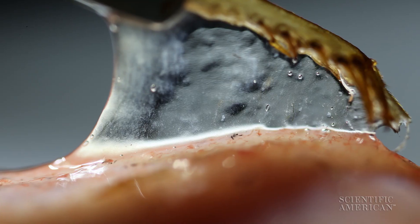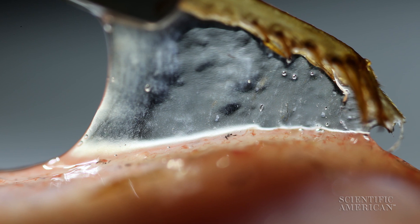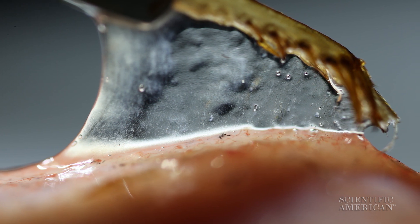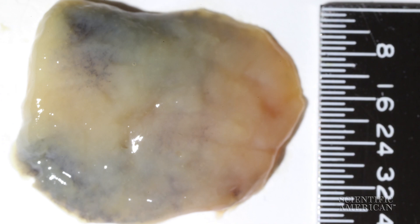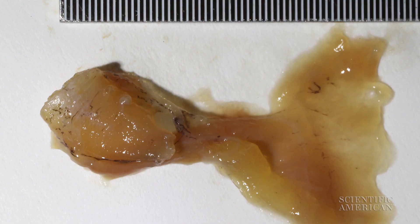But it's the saliva that temporarily glues the bug to a frog's tongue. Frog tongues are like spit-saturated sponges, since their salivary glands are inside the tongue.